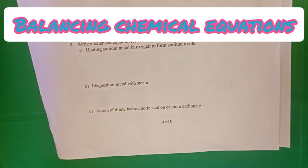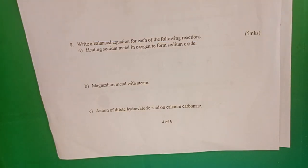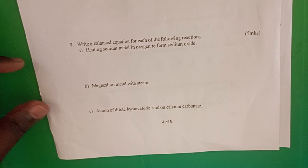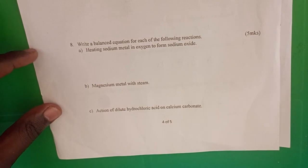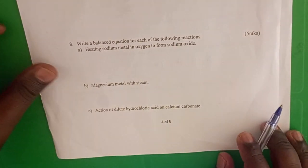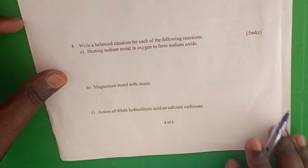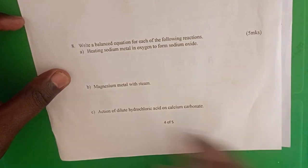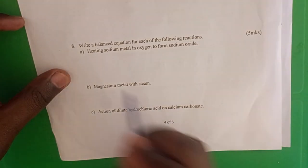Write a balanced equation for each of the following reactions. Reaction one: sodium metal reacting with oxygen to form sodium oxide.